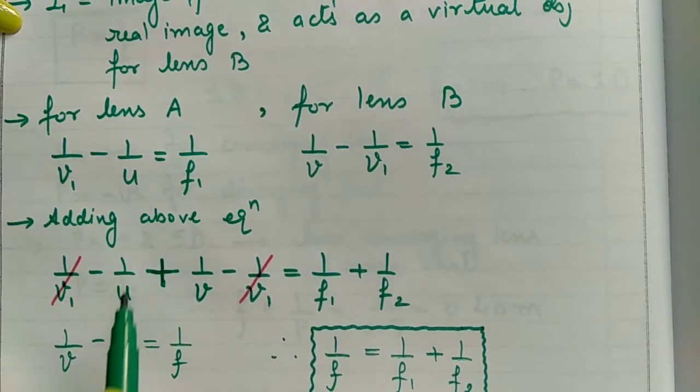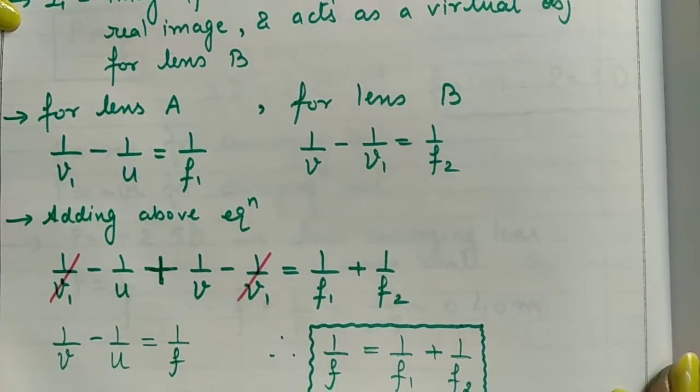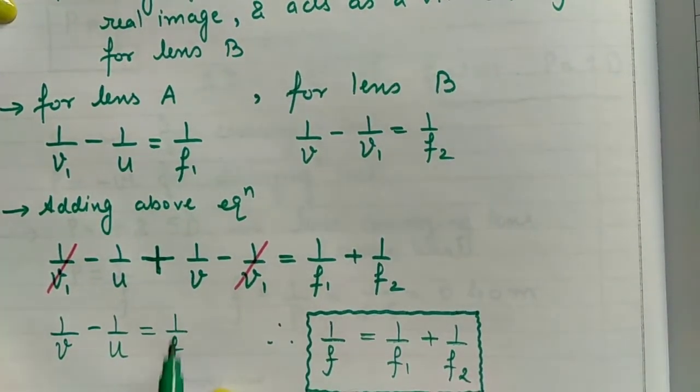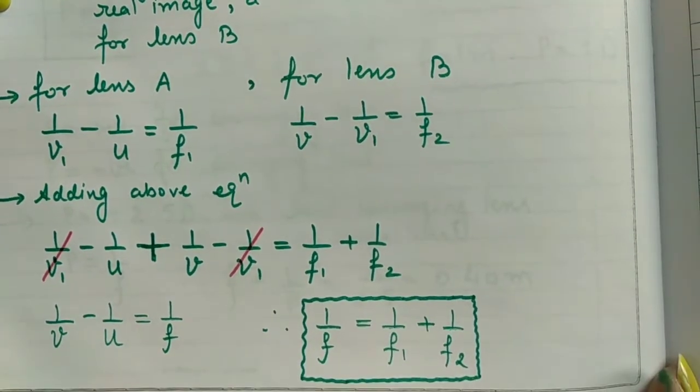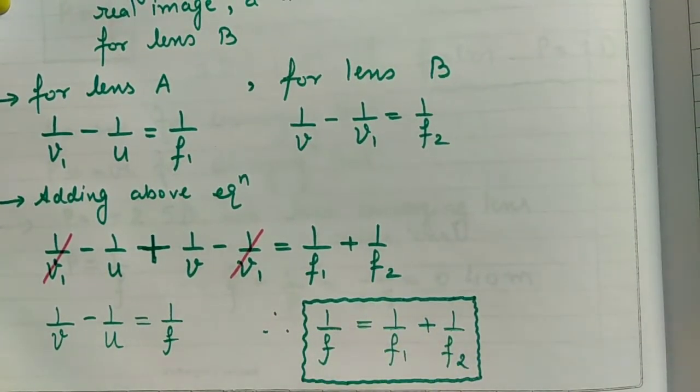And 1 upon F is actually equal to 1 upon F1 plus 1 upon F2. So this is the focal length of the combination of lenses A and B. This is the resultant focal length.